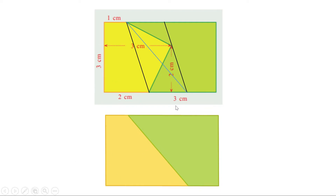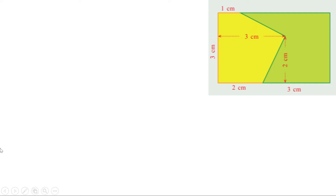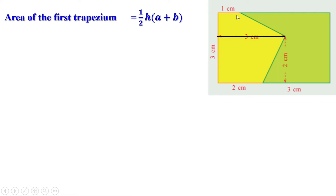We know these two parts have the same area. Now let us find the area of each part. Drawing a dividing line, this pentagon is split into two trapeziums. We find the area of each trapezium and add them. For the first trapezium: a is 1, b is 3, and the height h is 1 (since the total length is 3 and this portion is 2, leaving 1). Area equals half into 1 into (1 plus 3), which is half into 4, giving 2 cm².